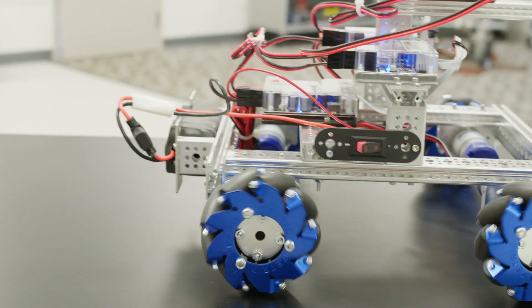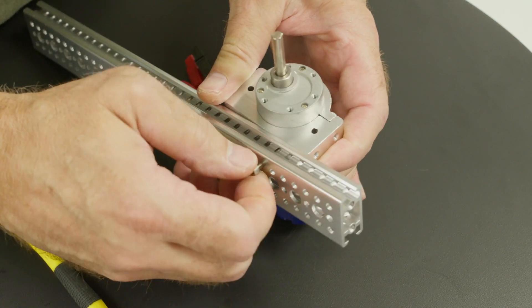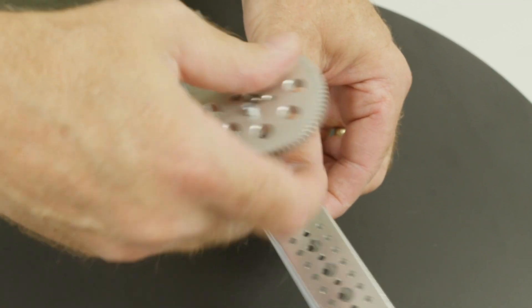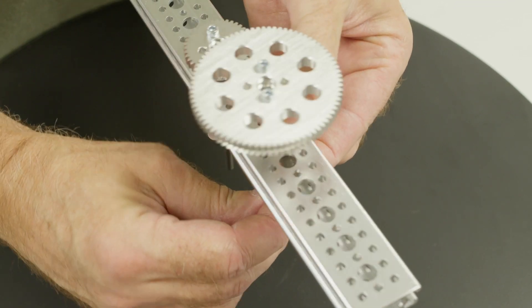The 8mm grid pattern allows you to build elements close together and provides numerous connection options. Additionally, the 8mm center holes allow bushings to be inserted and rotating components to pass through.